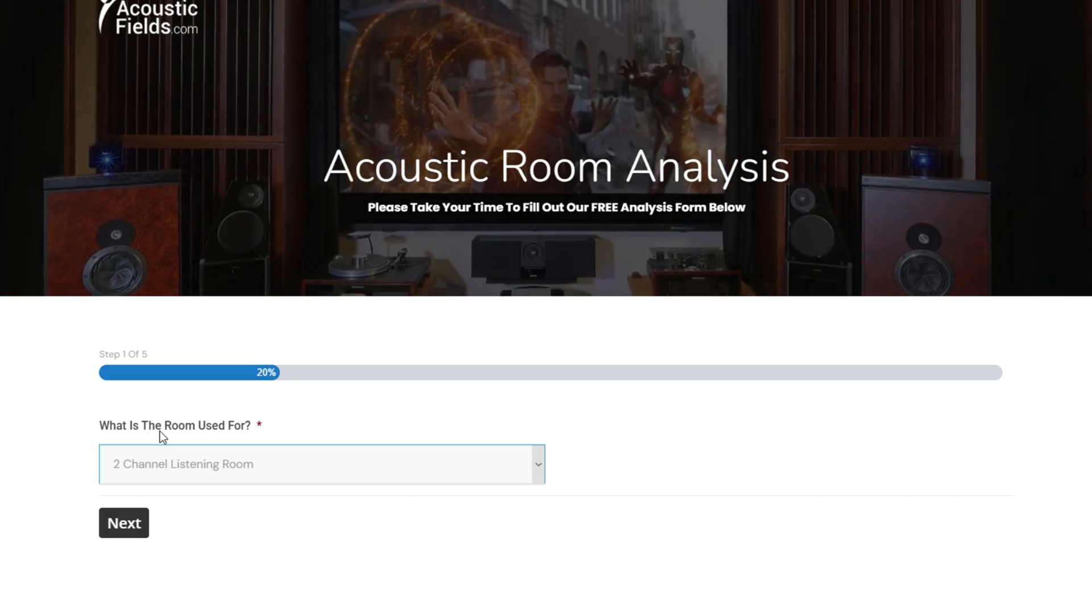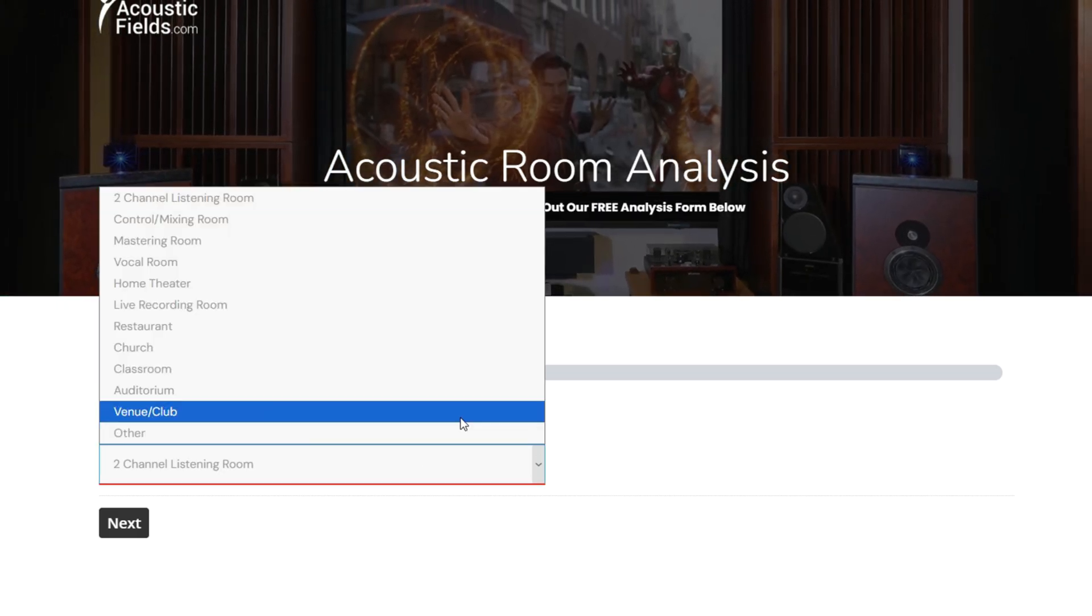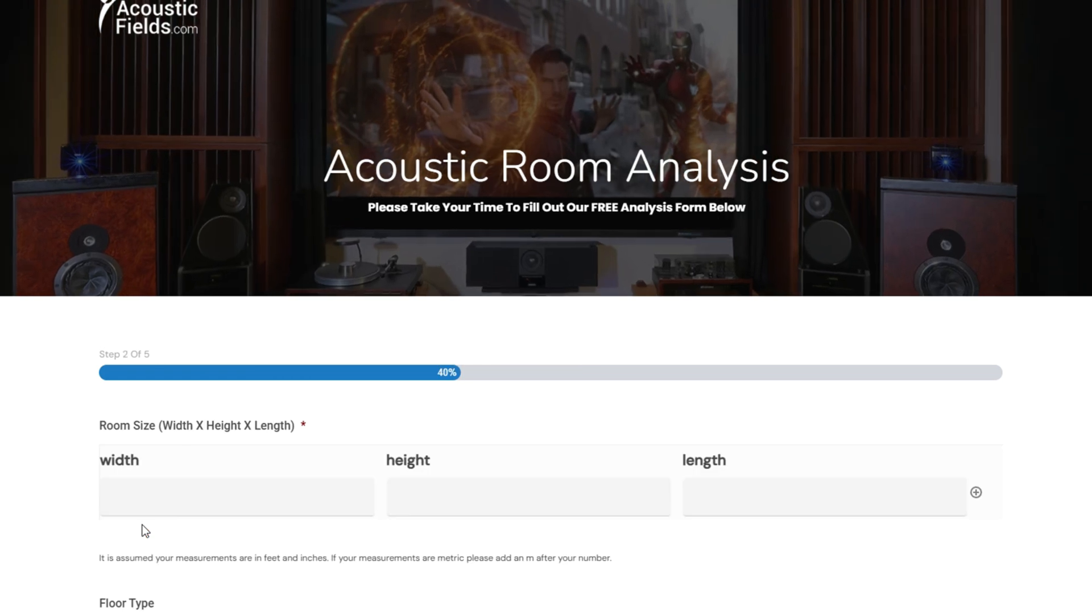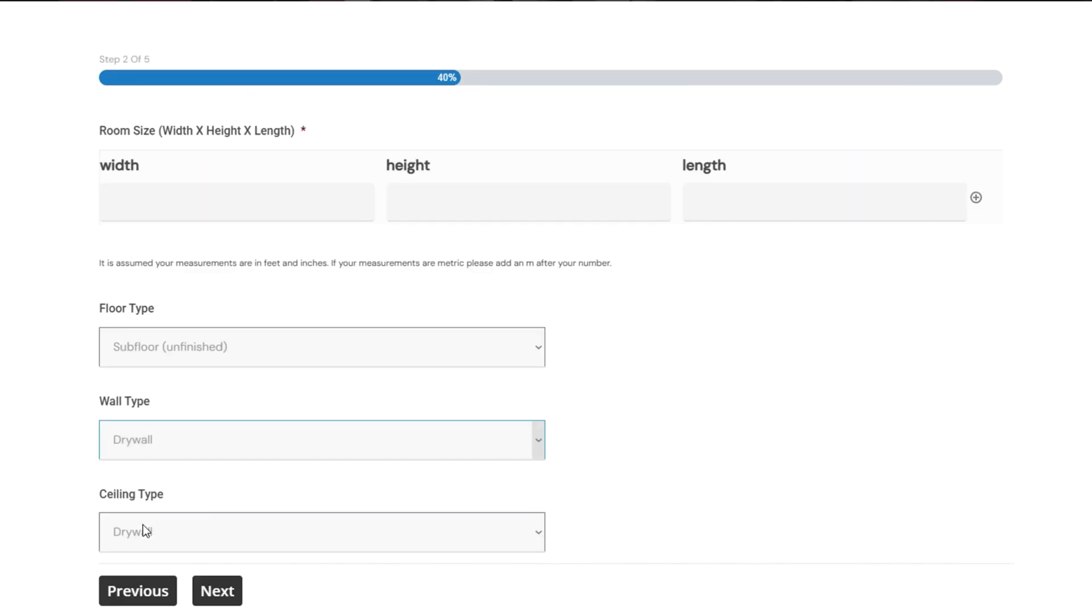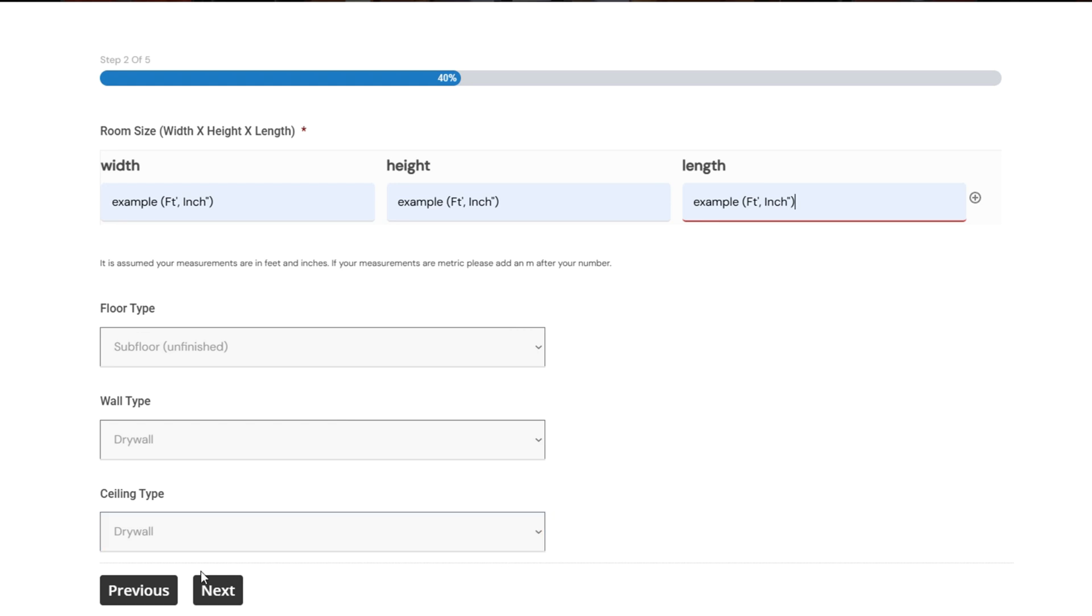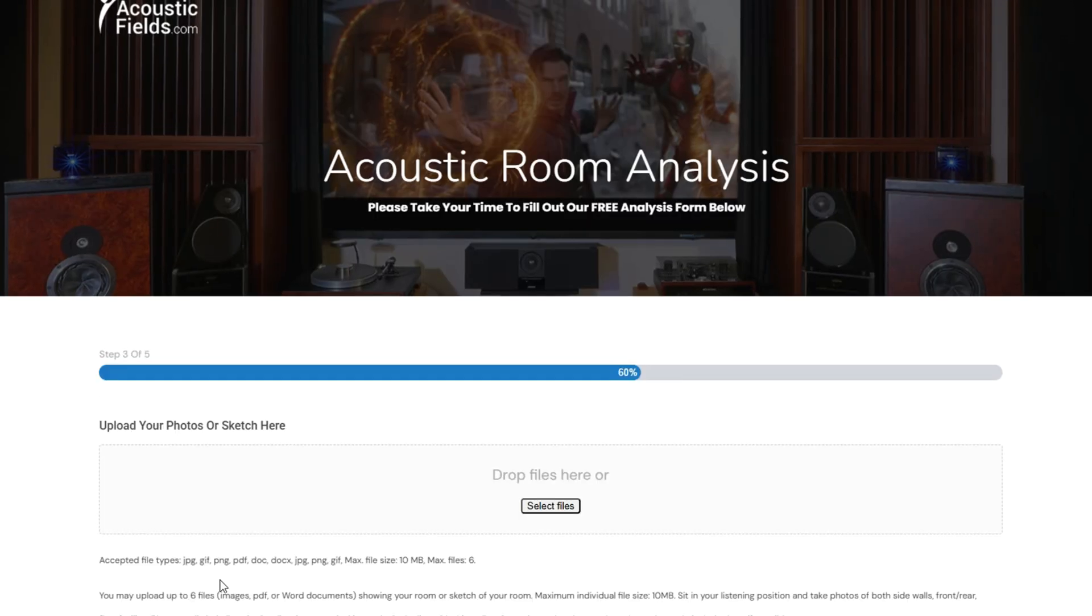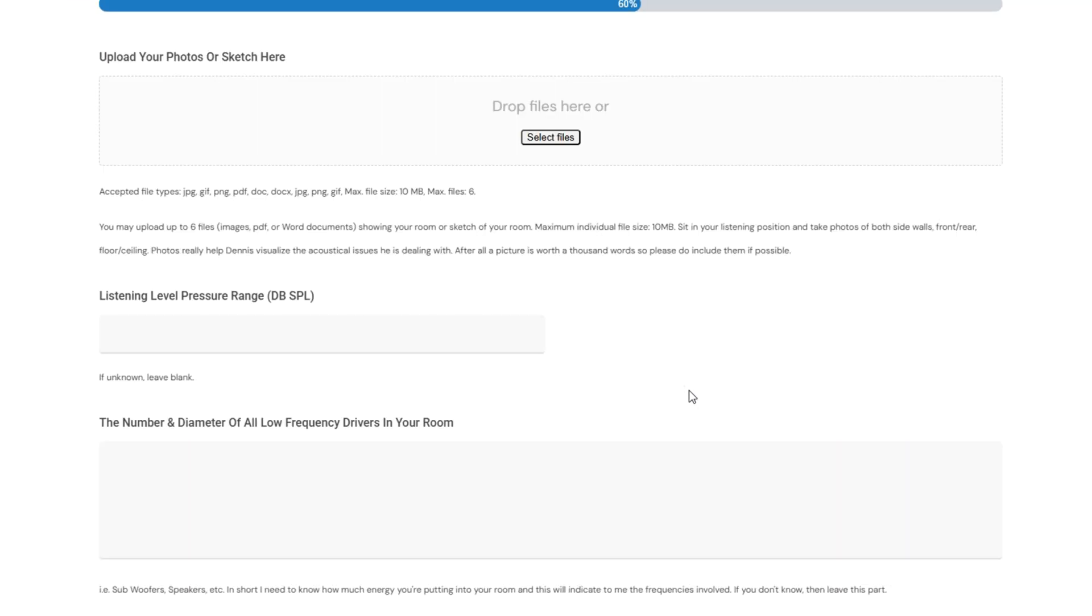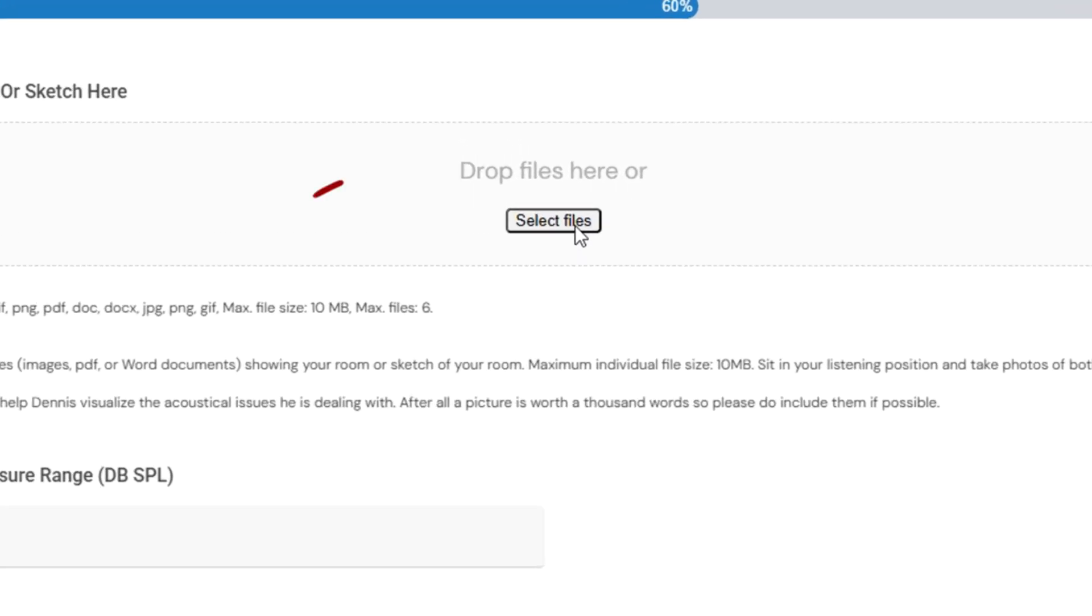And once we get to that, it's going to ask you just six or eight things, dimensions, structure, composition, things like that. Fill out that. Here's the most important thing about that part. You can include up to six pictures. So stand in the middle of the room, take pictures of each wall and take a picture of the floor and the ceiling and attach it to this form.